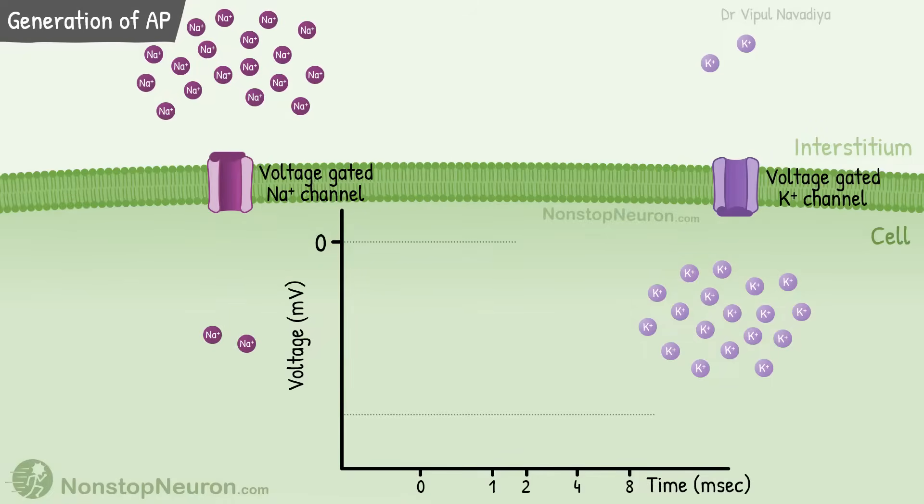Coming back to the voltage. Under the resting condition, the inside of the cell is electronegative. For example, the resting membrane potential of a neuron is about minus 90 mV.